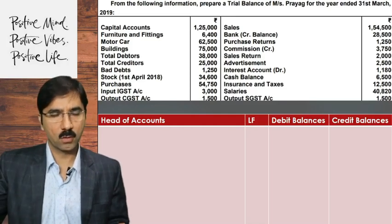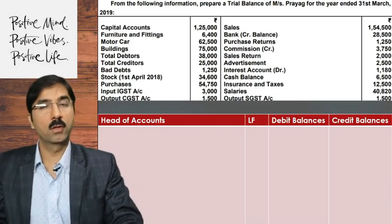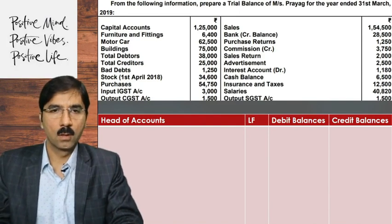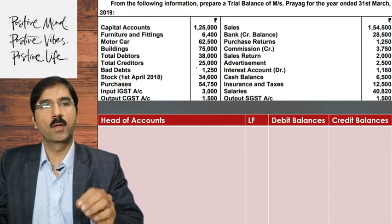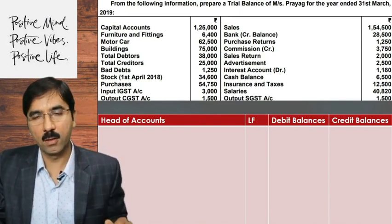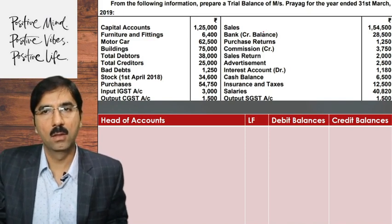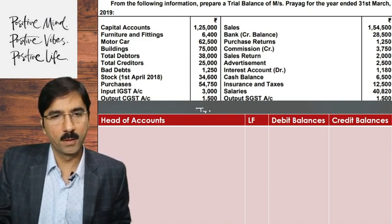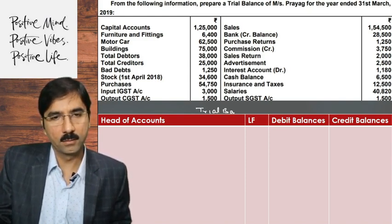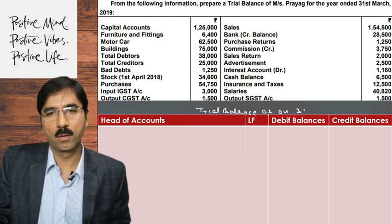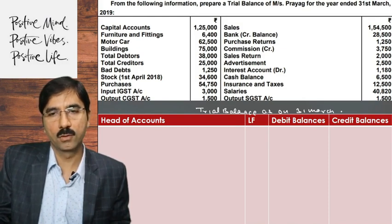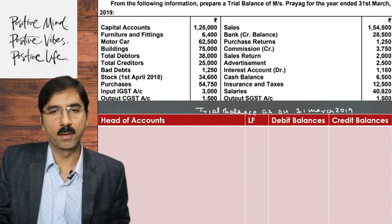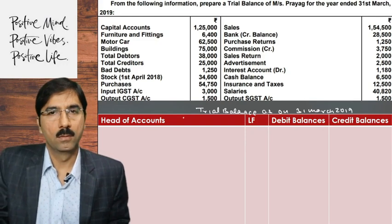Okay friends, the next question is very similar to the previous one. From the following information, prepare the trial balance of Mesa's Prayag for the year ended 31 March 2019. So, the first one is trial balance as on 31 March 2019.